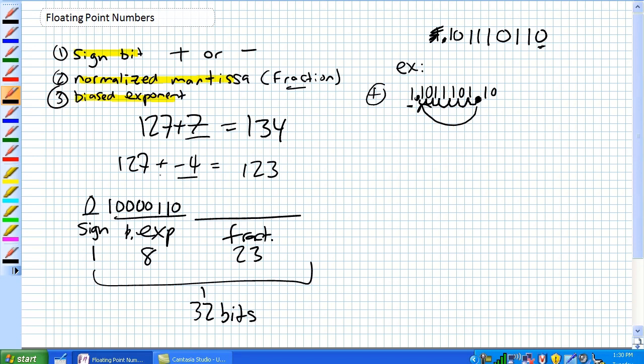Our fractional portion, remember, is our normalized mantissa, which is this portion of the number here. We got rid of that first one. So it's 10111011. And then what you can do, just keep on adding zeros until you've got 23 bits. So that's single precision format.